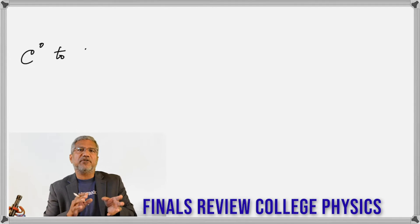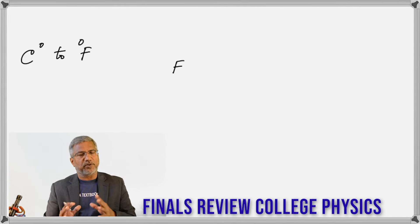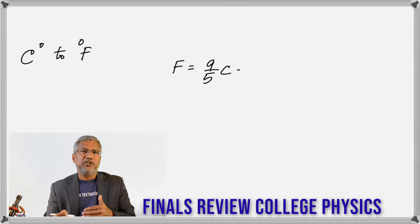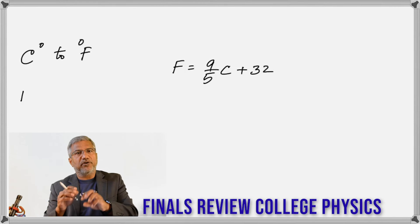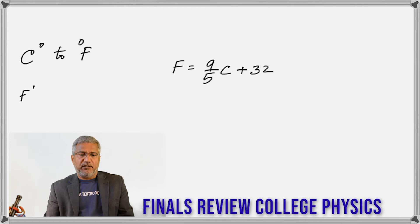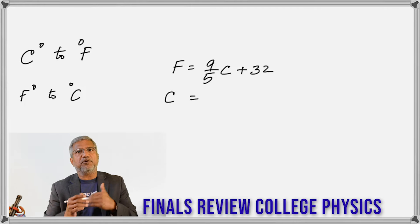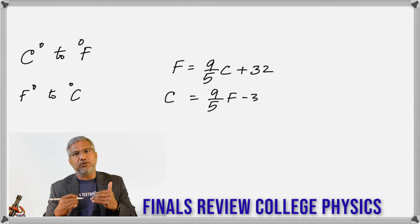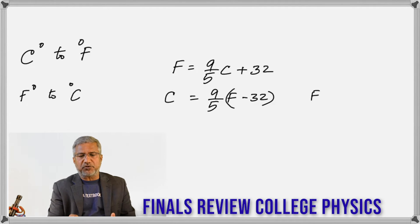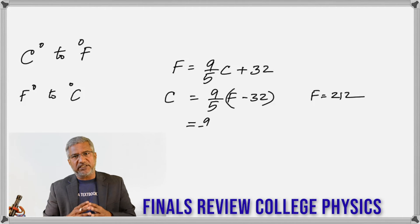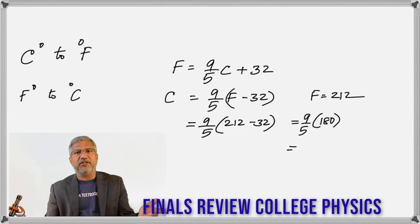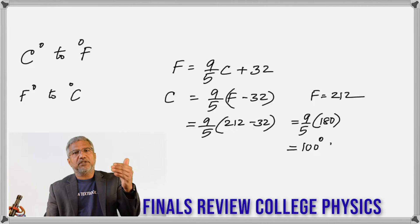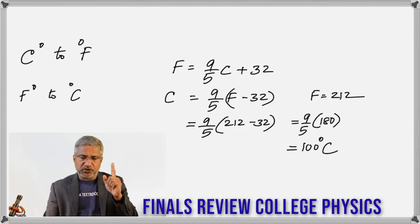To convert Celsius to Fahrenheit: F = (9/5)·C + 32 — first multiply by 9/5, then add 32. To convert Fahrenheit to Celsius: C = (5/9)·(F − 32) — first subtract 32, then multiply by 5/9. Example: F = 212 → (212 − 32) = 180, then 180 × (5/9) = 100°C. So 212°F equals 100°C.